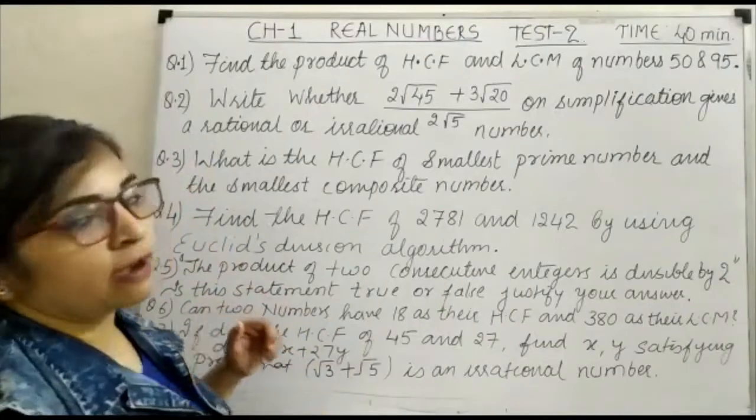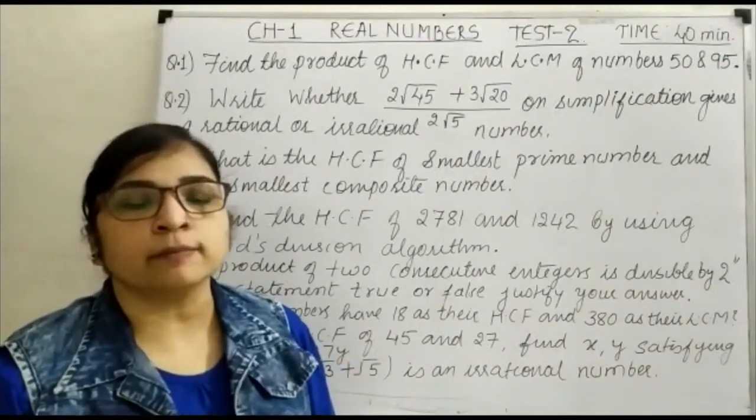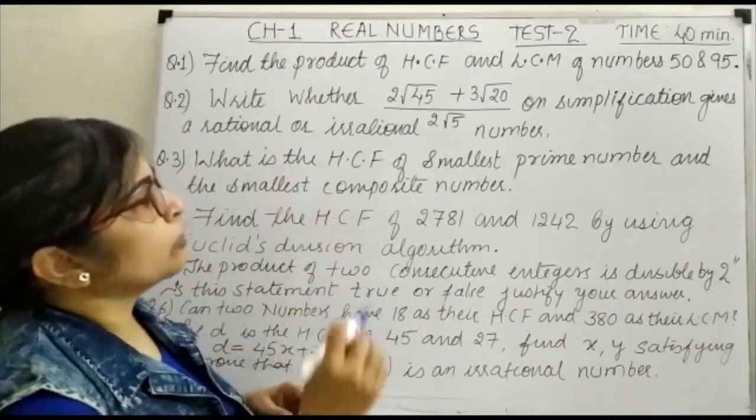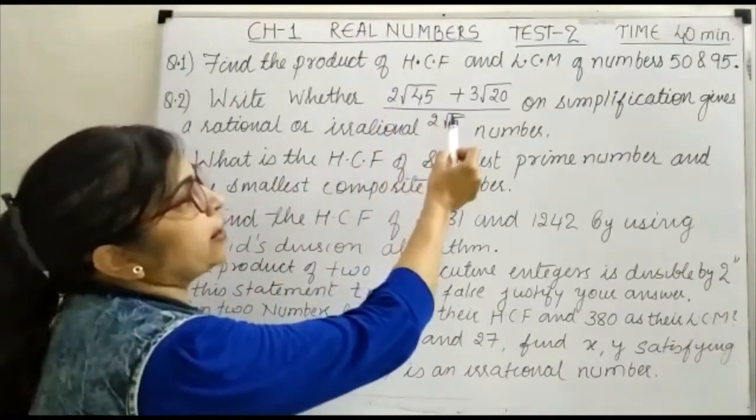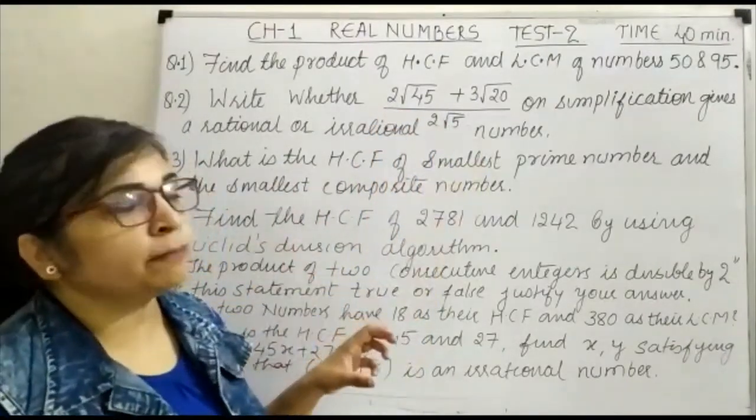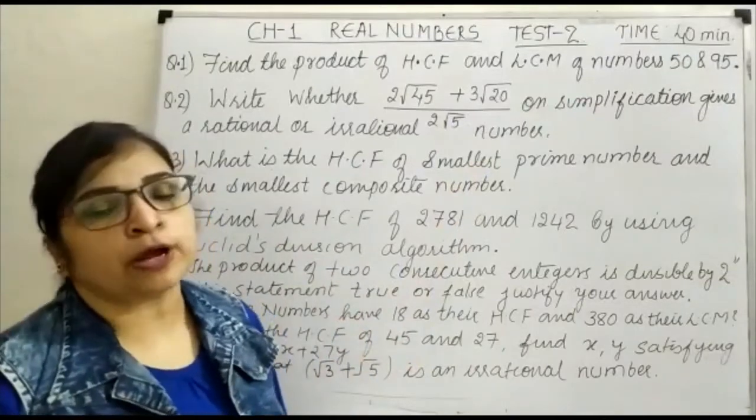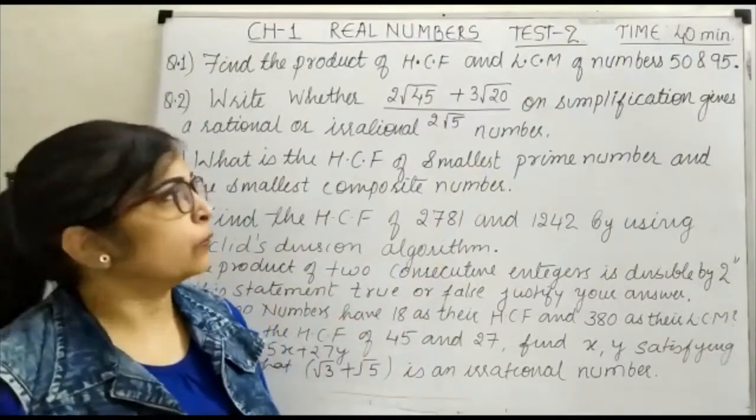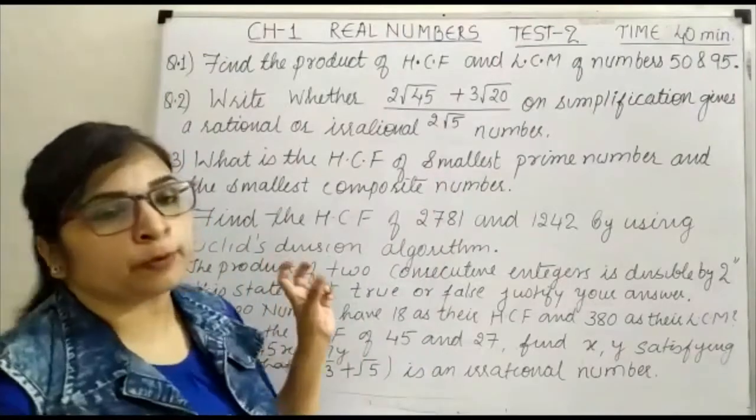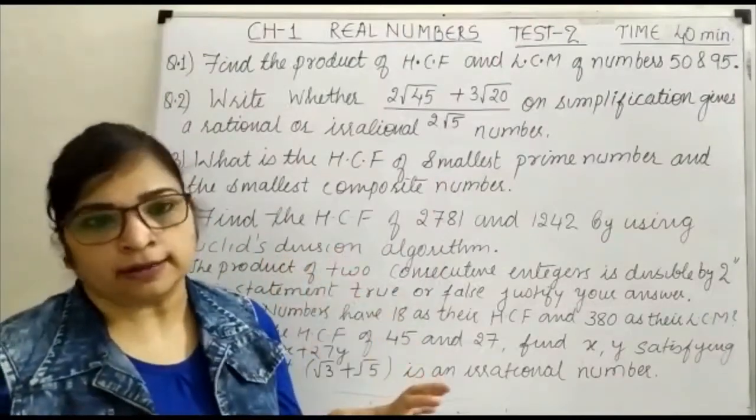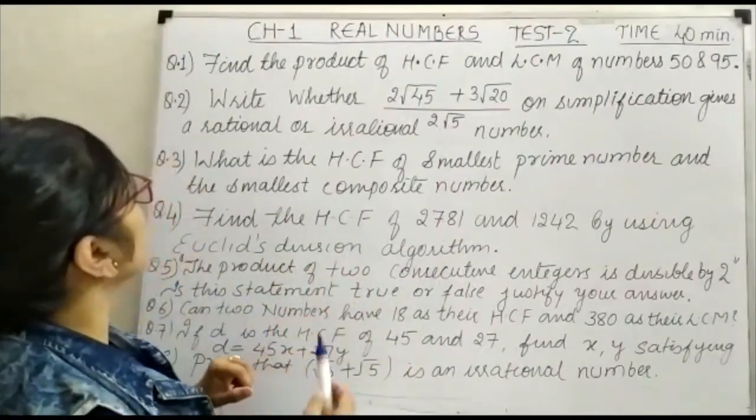Your questions are as follows. Question number 1 is: find the product of HCF and LCM of numbers 50 and 95. So you have to find out the product of HCF and LCM.